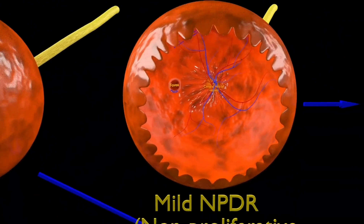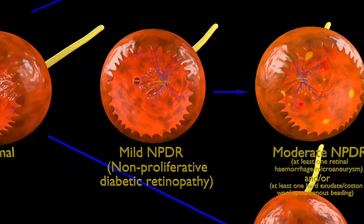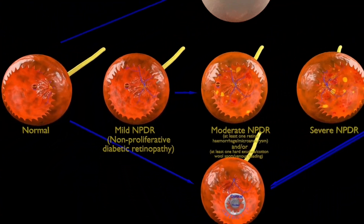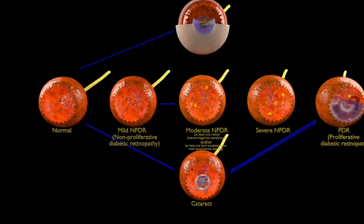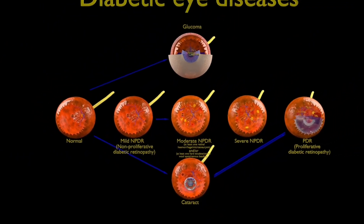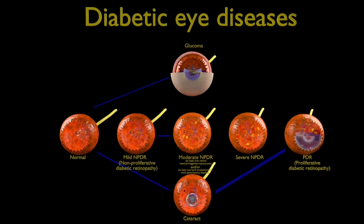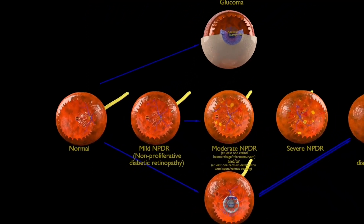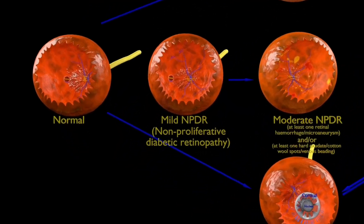Diabetic eye diseases include diabetic retinopathy, cataract, and glaucoma. The diabetic retinal changes are called diabetic retinopathy and are divided into non-proliferative diabetic retinopathy (NPDR) and proliferative diabetic retinopathy (PDR).